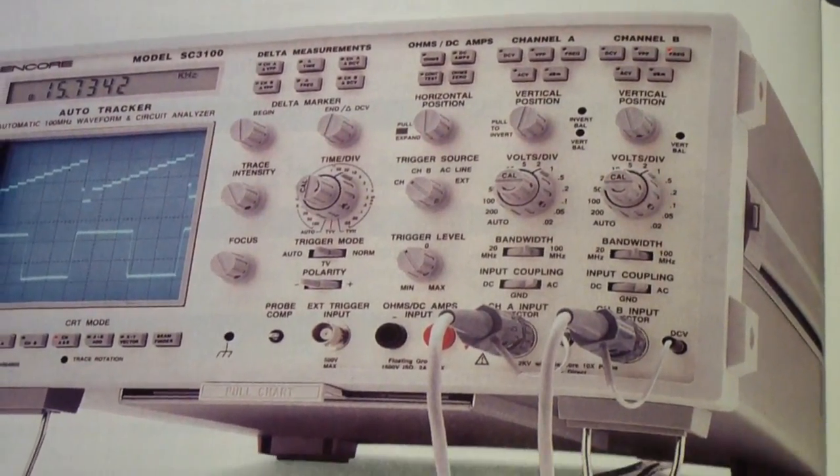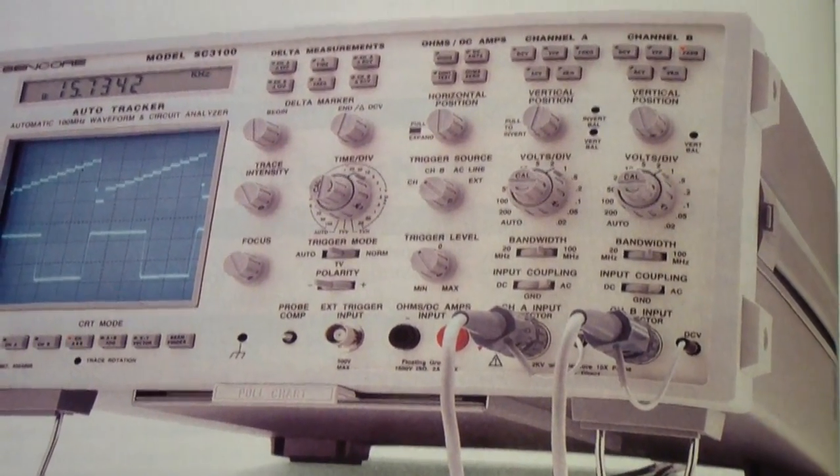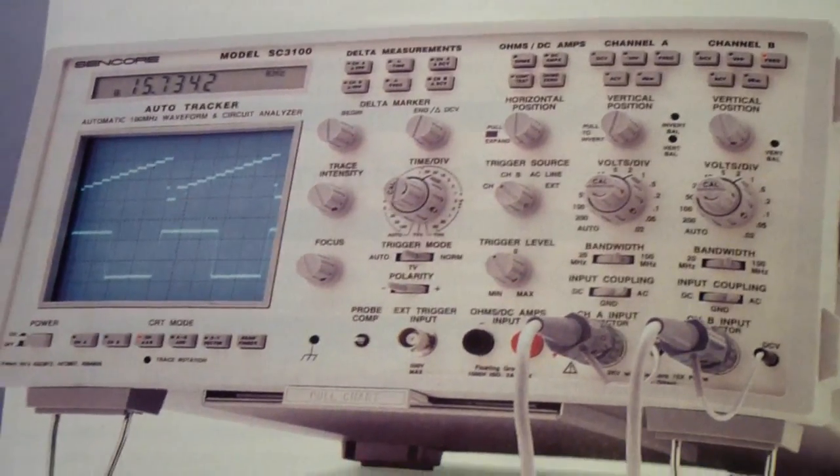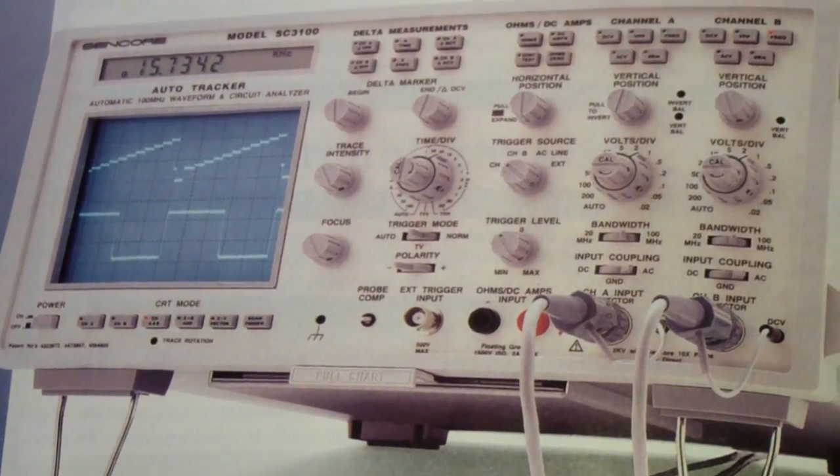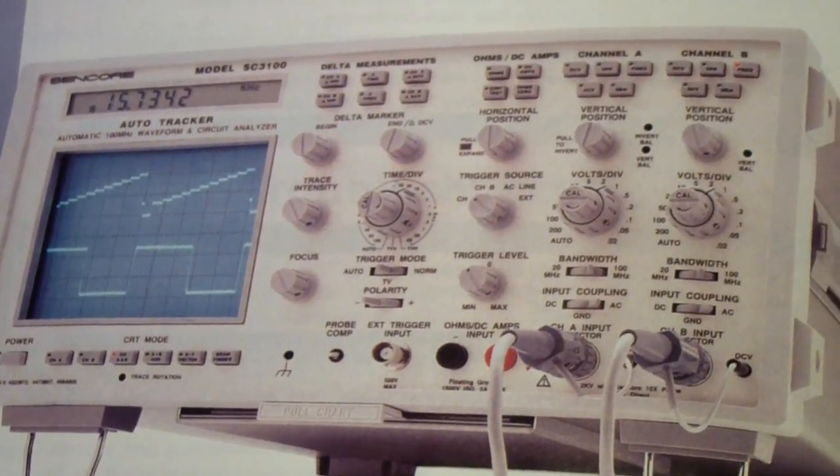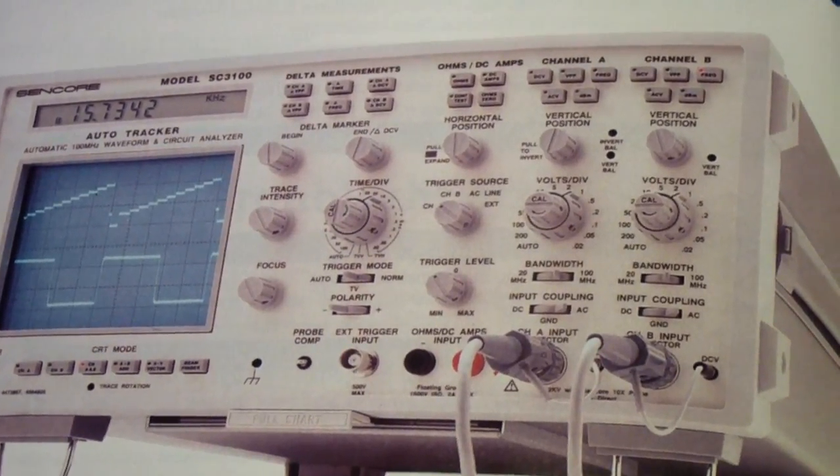This is the first in what I hope to be a series on vintage oscilloscopes. The one I'm going to pay most attention to in this segment is the Sencore SC3100. This is a picture out of the catalog from the mid-90s.